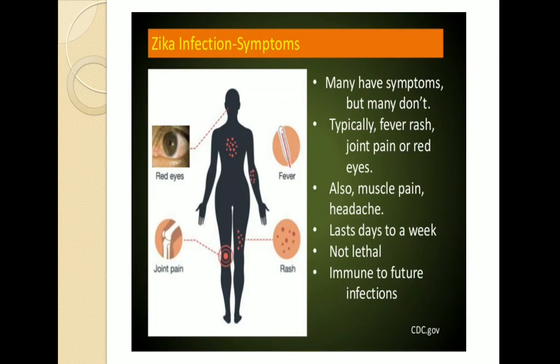Females are more prone to infection and there are chances the virus will cross the placenta. Coming towards symptoms of Zika infection: many people have symptoms but many don't. Typical symptoms that appear in some people are fever, rash, joint pain, red eyes, and muscle pain.